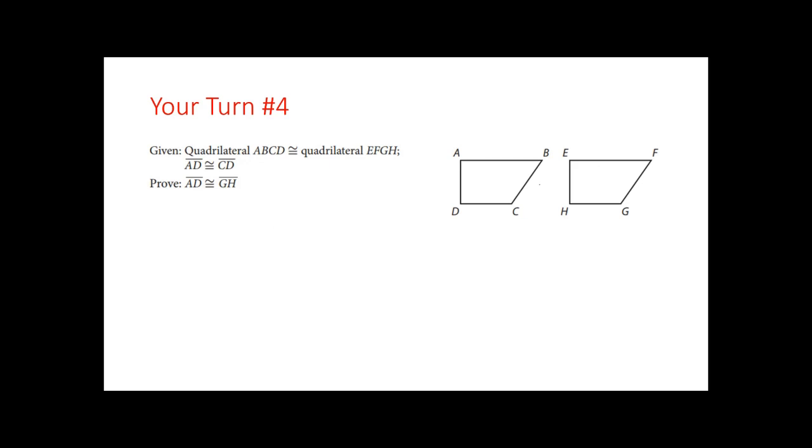Alright, your turn number four. So they go ahead and tell us that these two guys, these quadrilaterals are congruent. Wonderful. And that AD is congruent to CD. That's good to know. We have to prove that AD is congruent to GH. So start with your proof. And we're going to have to do this on the whiteboards. We're going to have to actually start our statements here and kind of get things going. Try to make sense of how we can, or what we can use for our reasoning. I'll give you a hint. This one is definitely, definitely using CPCFC. But you have to figure out where, where is it going to use that? And also pay attention to what's given. They gave you this. They already told you they're congruent. That's a good start.